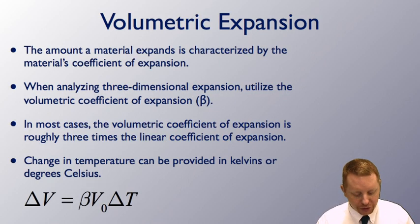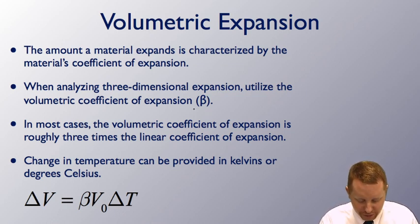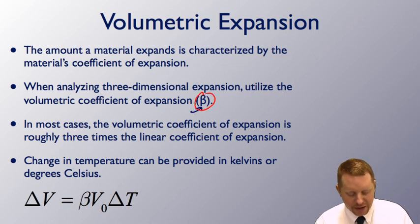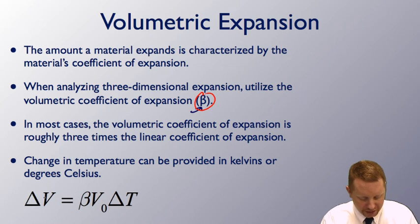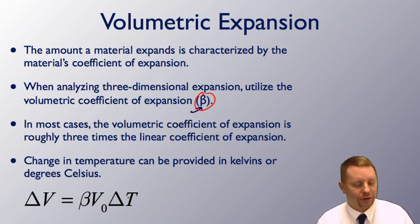When we talk about volumetric expansion or three-dimensional expansion on the other hand, we have to use the volumetric coefficient of expansion, beta. In most cases, the volumetric coefficient of expansion is roughly three times the linear coefficient of expansion. Our formula for change in volume will be the volumetric coefficient of expansion times the initial volume of an object times the change in temperature, again in either Kelvins or degrees Celsius.